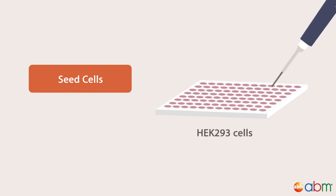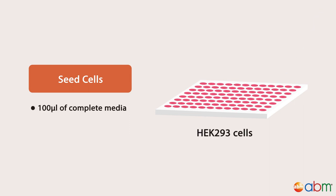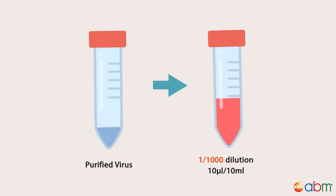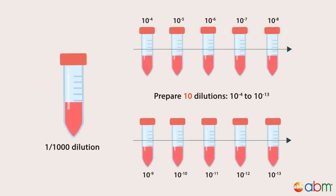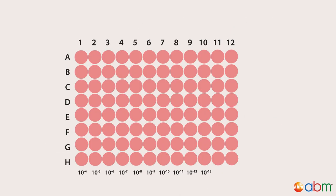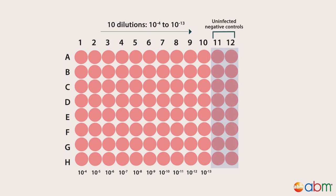Now that you have your purified sample, the last step is to calculate the virus titer. In each well of a 96-well plate, seed 293 cells in 100 microliters of complete media so that they will be 10–20% confluent the next day. The following day, prepare a 1 in 1,000 dilution by diluting 10 microliters of purified adenovirus stock in 10 ml of complete media. Vortex for 5 seconds. Make a series of 10 additional dilutions, each by a factor of 10. Label columns 1–10 of the 96-well plate with the corresponding dilutions, increasing from left to right. The last two columns will serve as uninfected negative controls.